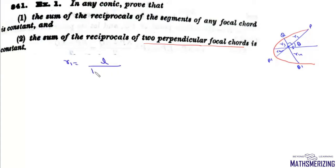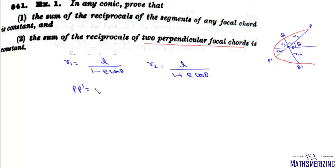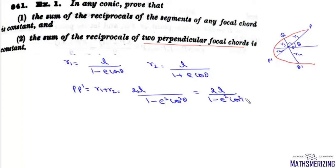We write R1 = L/(1 - E·cosθ) and R2 = L/(1 + E·cosθ), since the angle for R2 is θ + π. Adding R1 and R2 to find the chord length PP': taking the common factor L and computing the LCM gives PP' = R1 + R2 = 2L/(1 - E²·cos²θ).